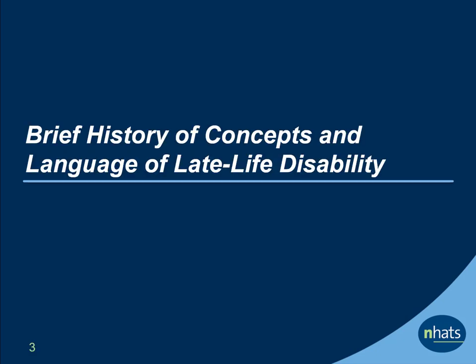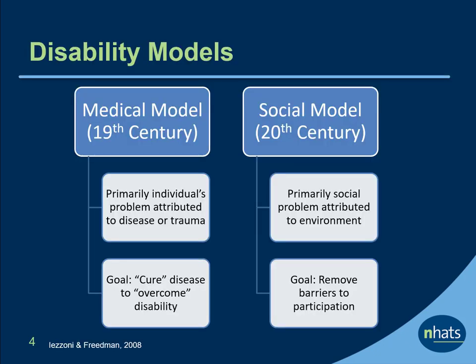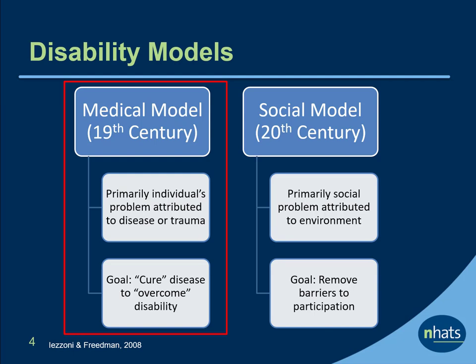Let's start with a brief history of concepts and language of late life disability. In the 19th century, a medical model was the dominant lens through which disability was understood. This model viewed disability as a characteristic of an individual, resulting primarily from disease or trauma. Medical management was aimed at curing the disease in order for the individual to overcome disability.